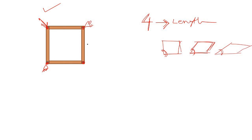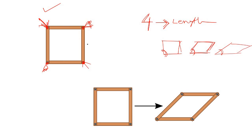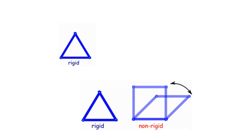This means the rectangle is not a stable or rigid shape. That is why when you use rectangular shape as the smallest unit of your truss and apply any type of load, the shape will simply collapse.